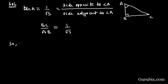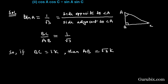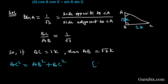So, if BC is equal to 1K, then AB will be equal to square root of 3K. We shall write square root of 3K here. And now we shall find AC, which is the hypotenuse of triangle ABC. So, AC squared is equal to AB squared plus BC squared, and this is because of the Pythagoras theorem.